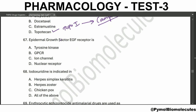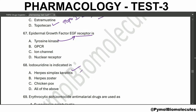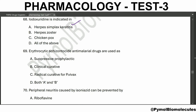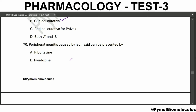EGF (epidermal growth factor) receptor is a tyrosine kinase receptor. Idoxuridine is indicated in herpes simplex keratitis. Erythrocytic schizonticide antimalarial drugs are used as suppressive, prophylactic, and clinical curative agents. Peripheral neuritis caused by isoniazid can be prevented by pyridoxine (vitamin B6).